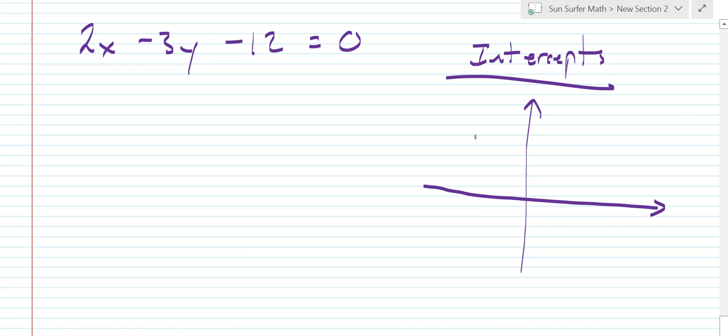are where the graph, the linear equation, crosses the x and the y axes. So here's my line. Here is the y axis and the x axis. And the x intercept is right here, where the linear equation crosses the x axis. Now, the y value here is always equal to 0. The y intercept is where the linear equation crosses the y axis. And the x value here is always equal to 0.